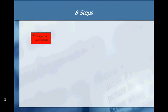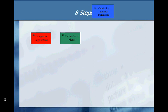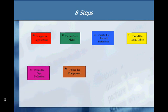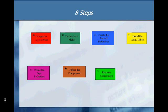The eight steps are: Step 1, design the application. Step 2, define new fields. Step 3, create the record definition. Step 4, build the SQL table. Step 5, create the page. Step 6, define the component. Step 7, register the component. Step 8, test the application.